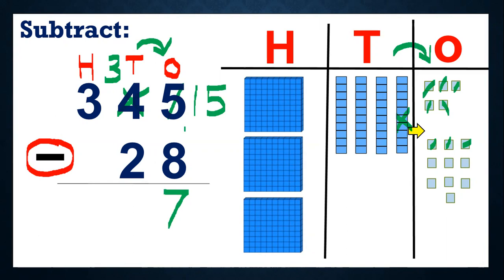Now in tens, what do we need to do? We need to remove two from three, right? Because we borrowed one ten, we have only three tens now. So we need to remove two. One, two, three — we have three tens. If we remove one, two — how many are left? One ten is left. So we will write one in tens.